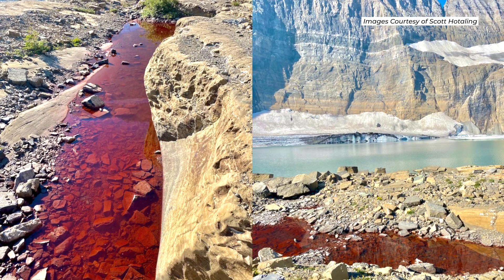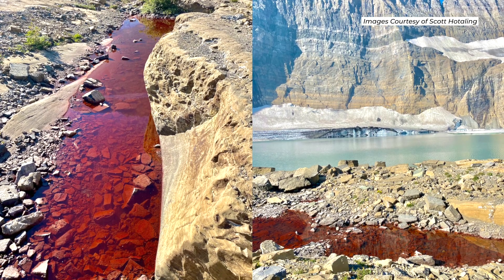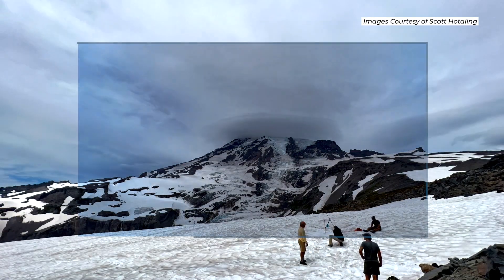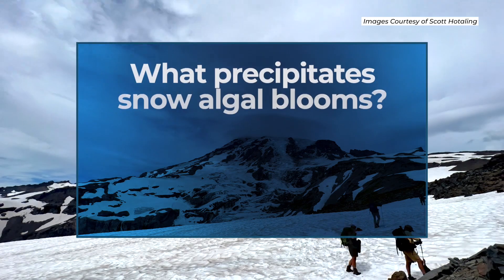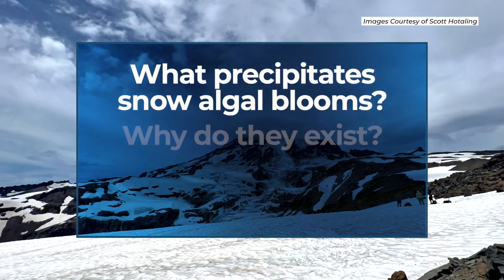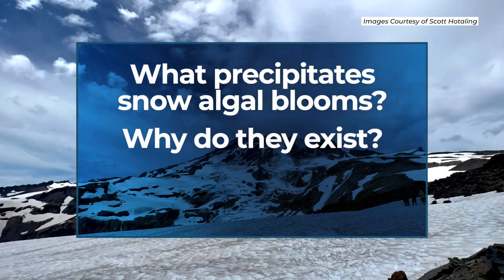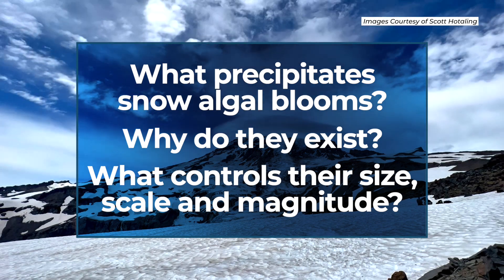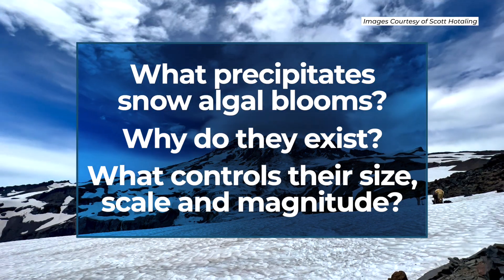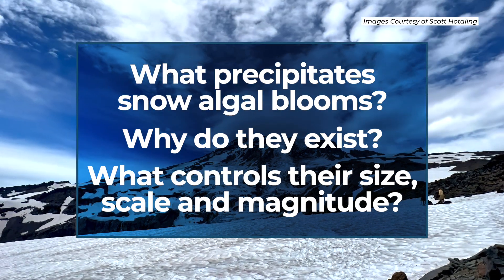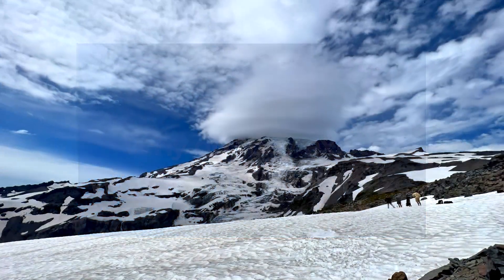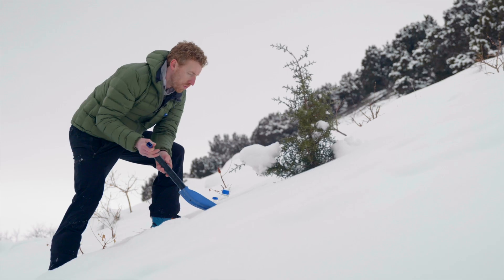What we're working to understand — in collaboration with folks at the University of Montana and University of Minnesota — is what precipitates snow algal blooms, why they exist, what controls their size, scale, and magnitude, and how much they actually affect snowpack melt in Utah, Washington, Montana, and other places in the West, and how that is going to change.